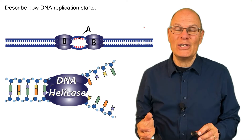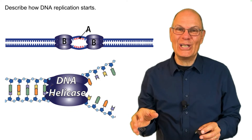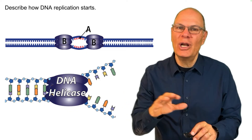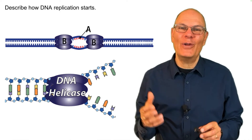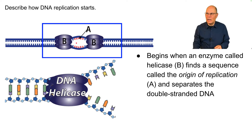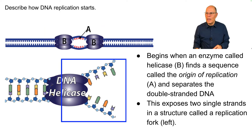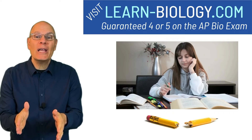Describe how DNA replication starts. In the model of DNA replication we're about to discuss, there's a lot of simplification compared to how the process actually works in nature, but this is exactly what you need to know for AP Biology. The process begins when an enzyme called helicase finds a sequence called the origin of replication — which signals where to start replicating — and separates the double-stranded DNA by breaking the hydrogen bonds holding the two strands together. This exposes two single strands and creates a structure called a replication fork.